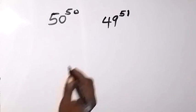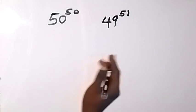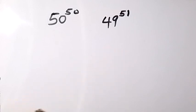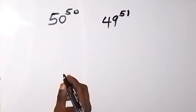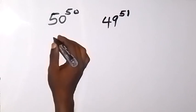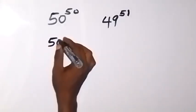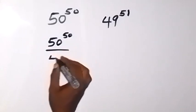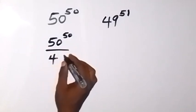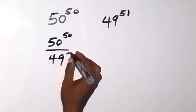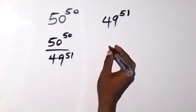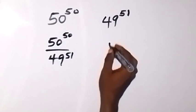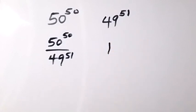So here let's divide both sides by 49 raised to the power of 51. This side will now be 50 raised to the power of 50 divided by 49 raised to the power of 51. Then this side will remain 1. When we divide this side by 49 raised to the power of 51, that will remain 1.